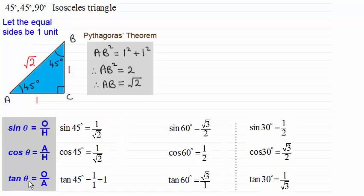And for the tan of 45 degrees, that's opposite over adjacent. Tan of 45 degrees is opposite one over the adjacent one. One over one is one. So by just remembering this triangle here, it's very easy then to work out what the sine, cosine, and tan of 45 degrees is.